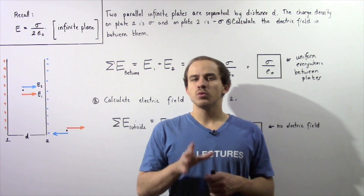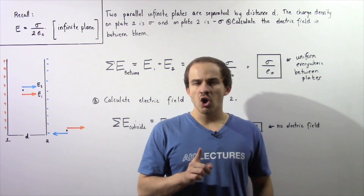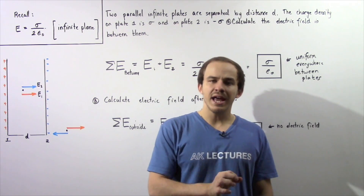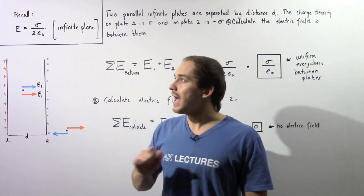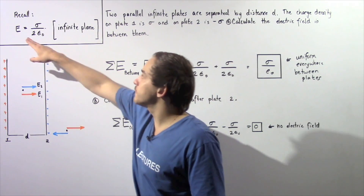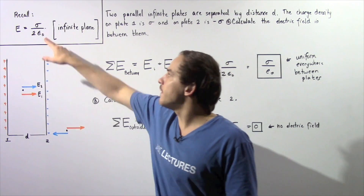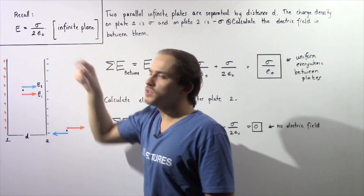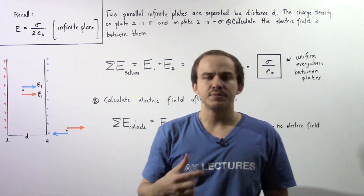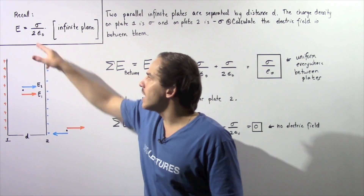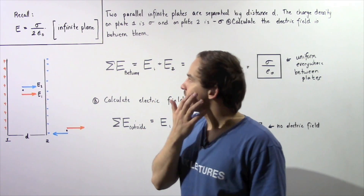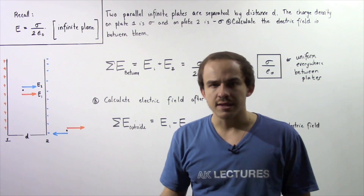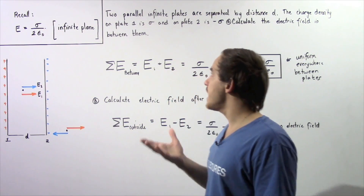In the previous lecture, we were able to show that the electric field as a result of an infinite plane is constant. In fact, the electric field is given by the equation sigma divided by 2 multiplied by epsilon naught, where epsilon naught is the permittivity of free space constant, and sigma is the charge density — the charge per unit area.